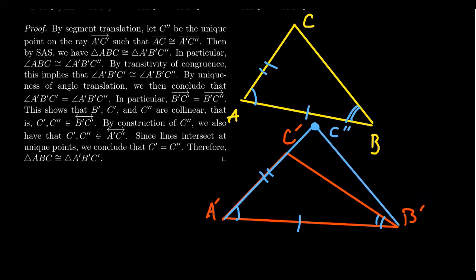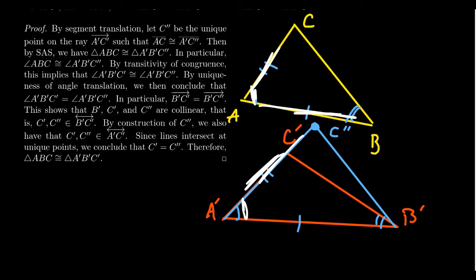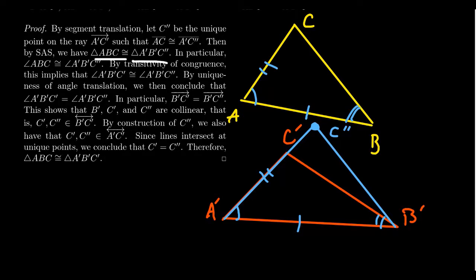We then consider triangle A'B'C'' and compare it to triangle ABC. Notice that we have: segment AC congruent to segment A'C'', angle A congruent to angle A' by assumption, and segment AB congruent to segment A'B' by assumption. Therefore, by side-angle-side, triangle ABC is congruent to triangle A'B'C''.